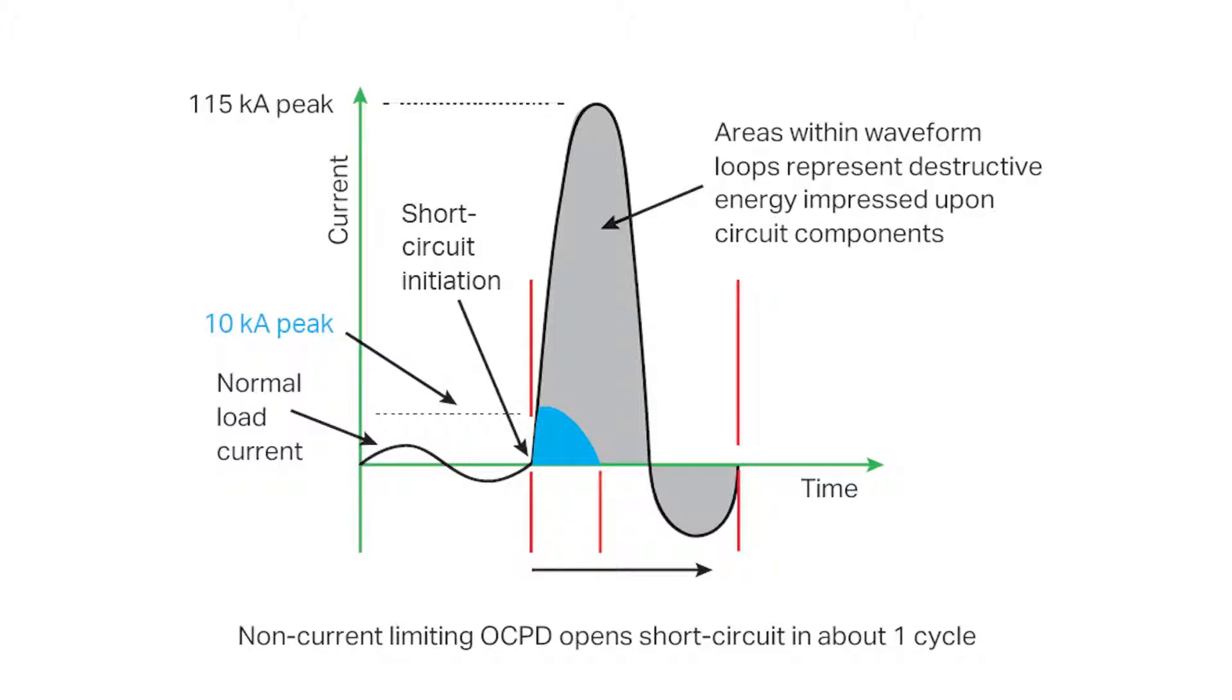A non-current limiting overcurrent protective device permits fault current to build up to its full value and lets through an immense amount of destructive current, heat, and magnetic energy before opening. Some overcurrent protective devices will permit short circuit currents to flow for more than one cycle.